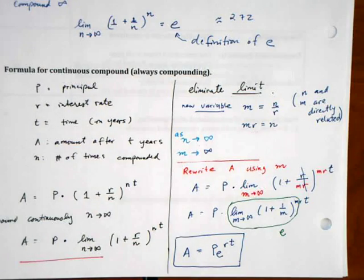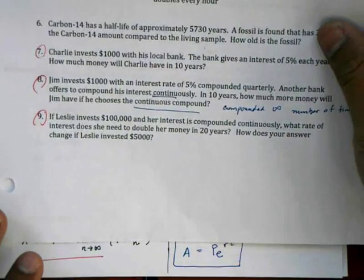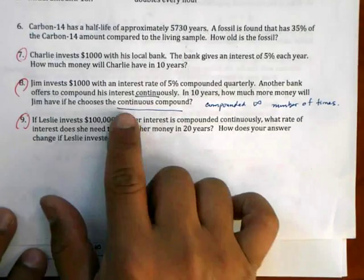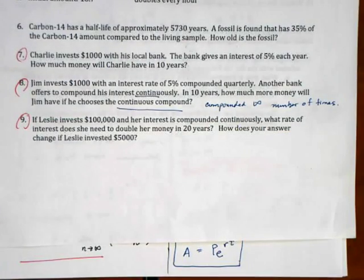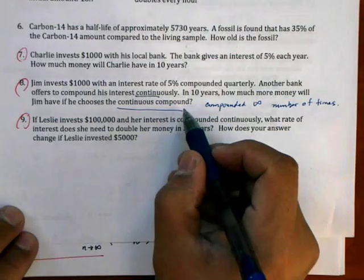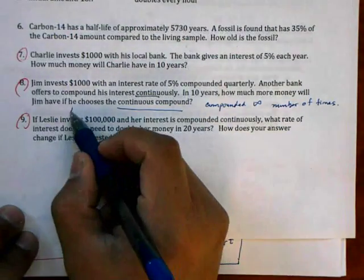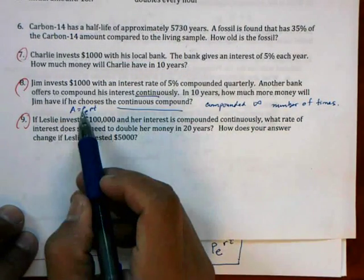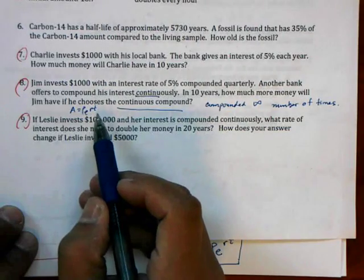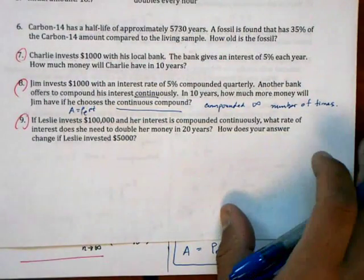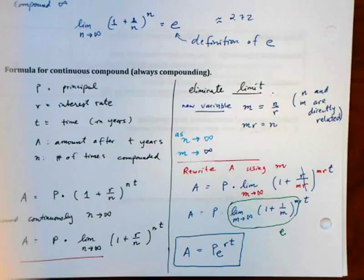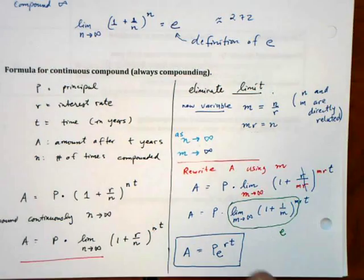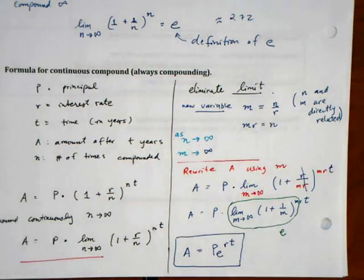Going back to the problem that we had before, I'm going to let you finish this on your own. And you can just figure out, ask yourself, what's P when it's continuously compounded? You know it's A equals PE to the RT. Ask yourself, what's P in this case? What's R? What's T? And now you can actually solve and answer this equation fairly quickly, provided you understand this entire process and how it works.